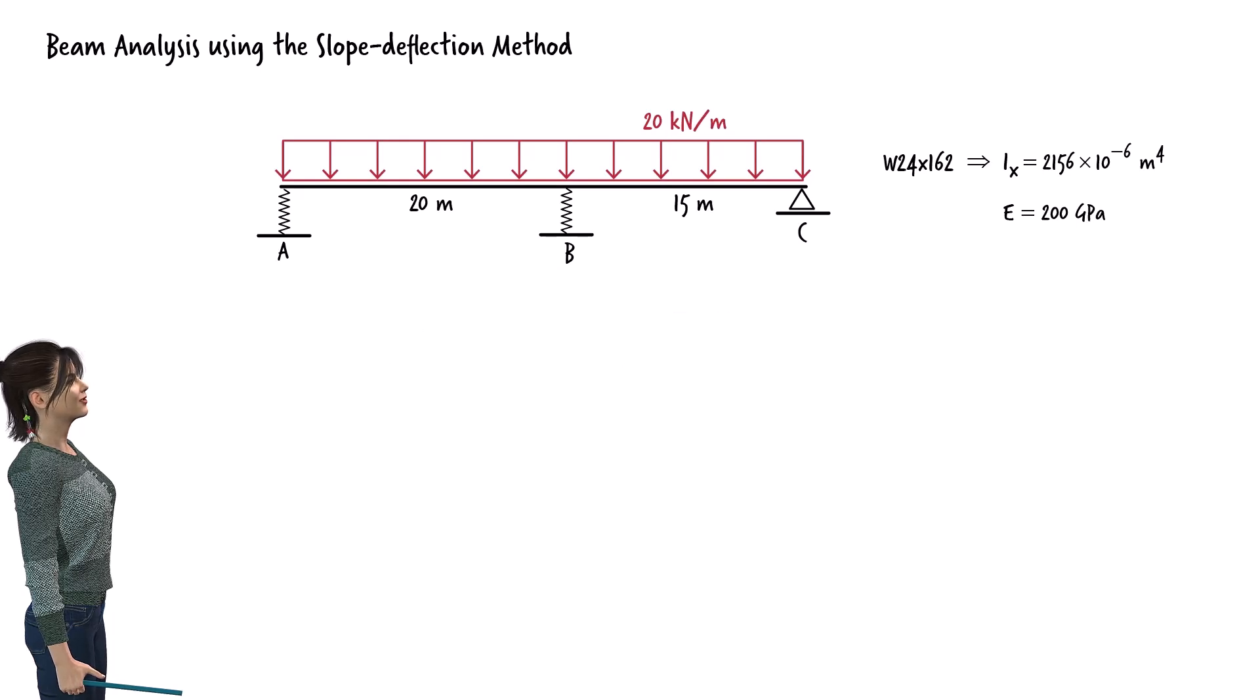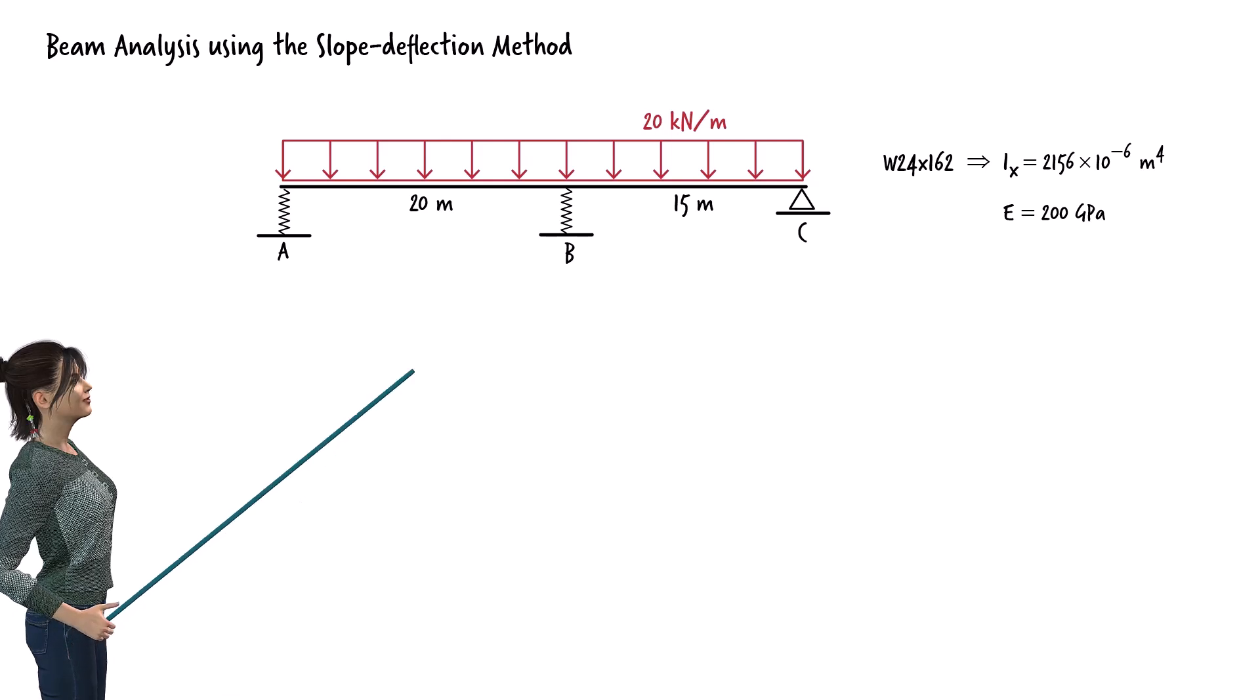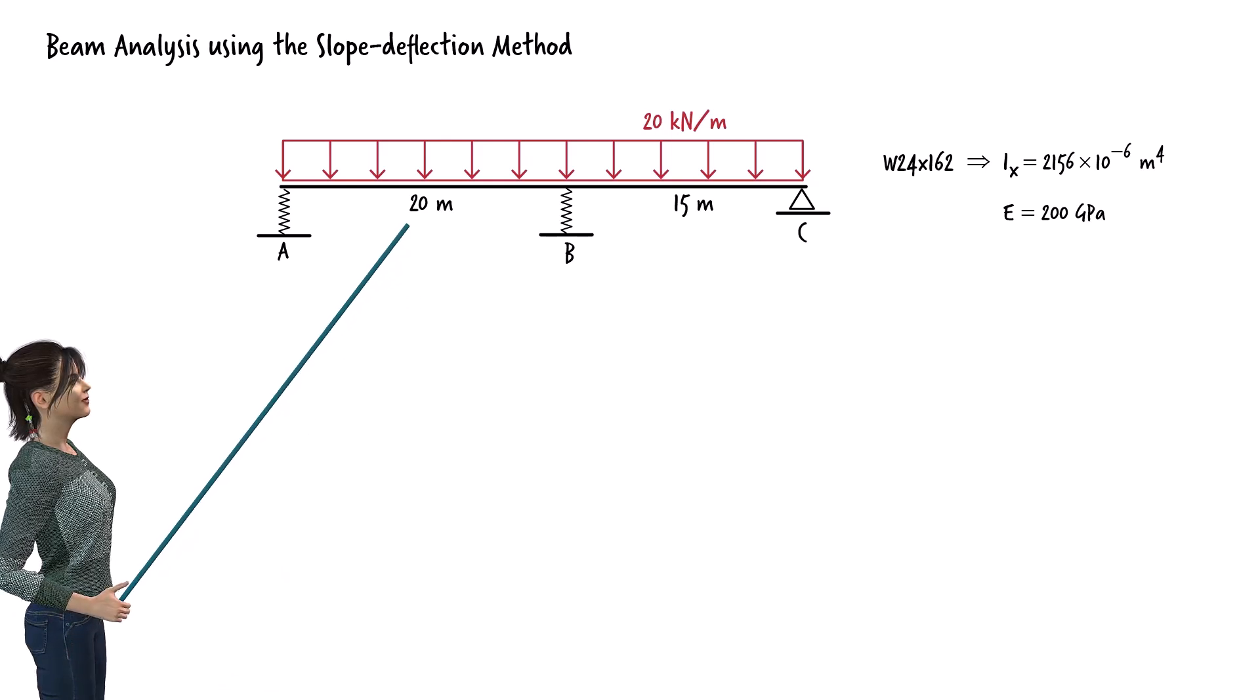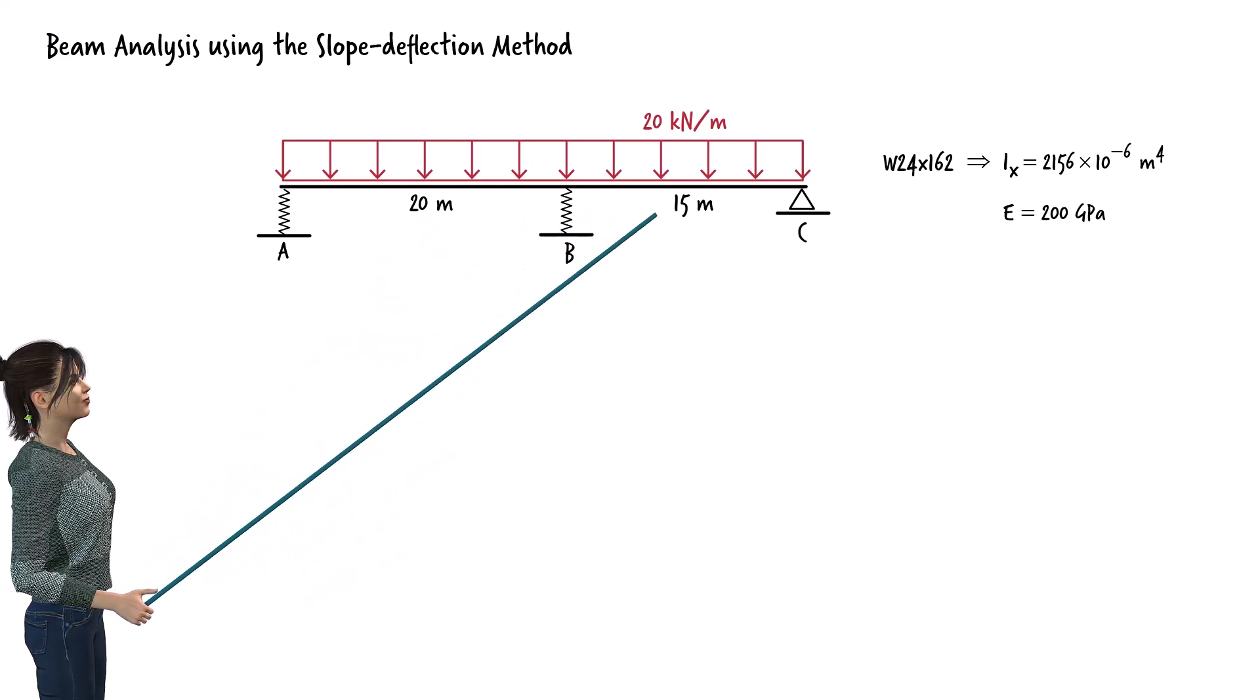Let's analyze the beam. Since the beam is statically indeterminate, we can use the slope deflection method for the analysis. This classical technique is especially useful for beams experiencing support settlements. In this case, the beam consists of two spans. The left span is 20 meters long, and the right span is 15 meters.